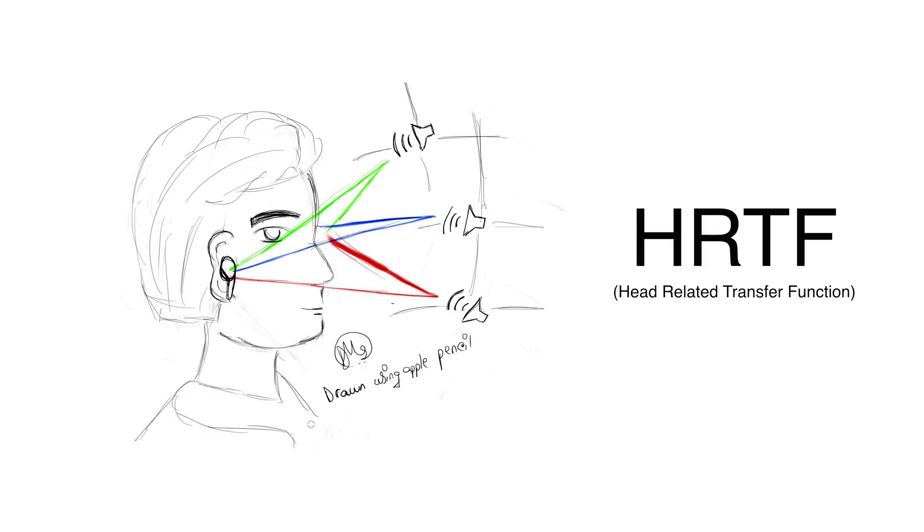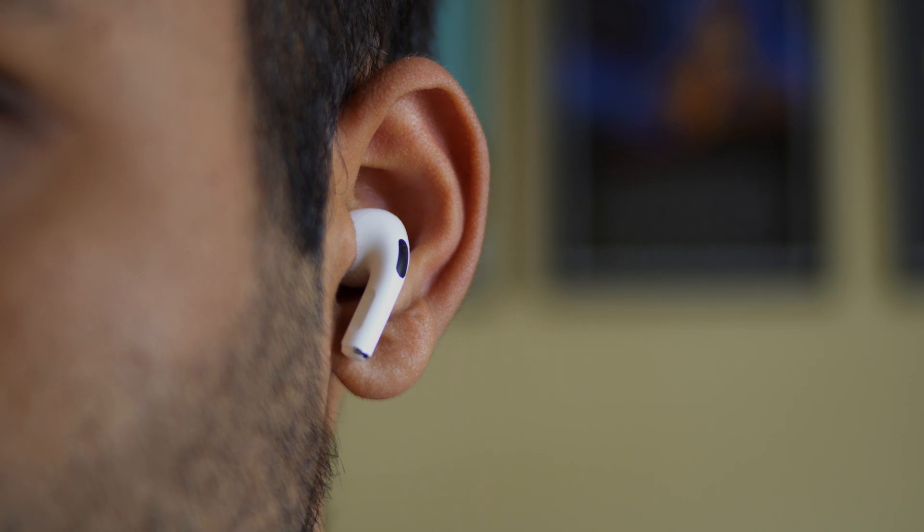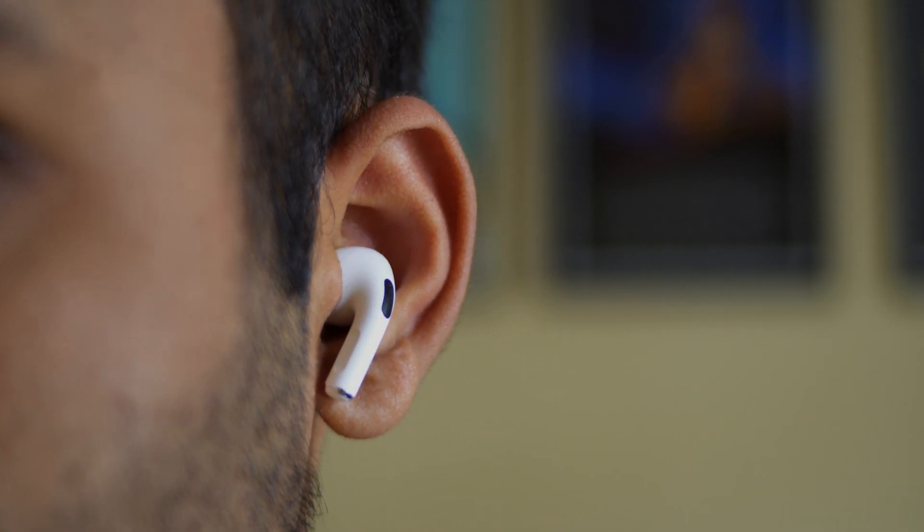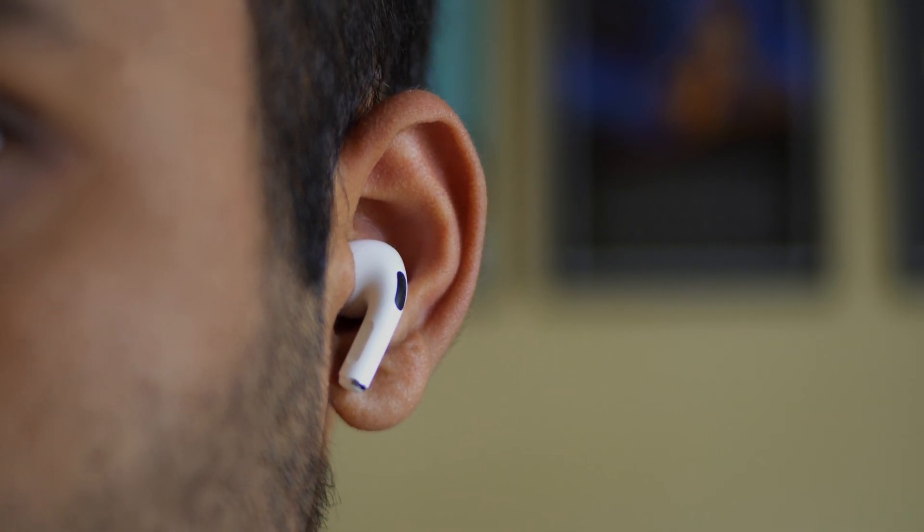The way this works behind the scenes is that there's a lot of processing, a lot of math, and a lot of algorithms involved to create that spatial experience — specifically something called HRTF, or Head Related Transfer Functions. These basically emulate audio that's right up close to your ear through your earphones and change its frequency and other characteristics to make it feel like sound is around you and a couple of feet away.